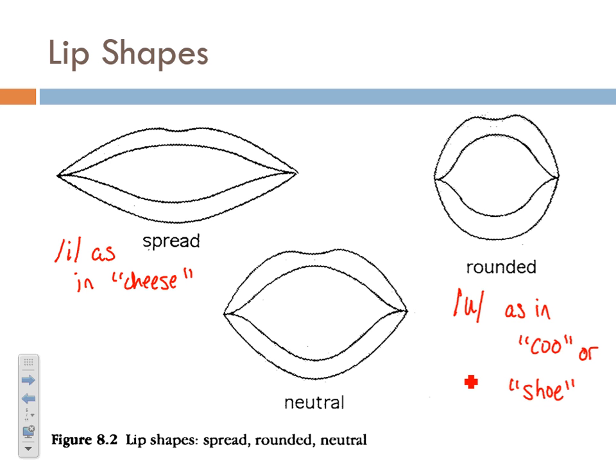Try saying 'coo' or 'shoe' and try not to round your lips — you're going to get something that sounds a little funny. It's very important to note the distinguishing characteristic of lip shape when describing how a vowel is produced. Besides spread and rounded, you also have 'neutral' — if you don't specify lip shape, you're assuming a neutral lip shape, meaning the lips are not rounded and not spread, just somewhere in between those two extremes.